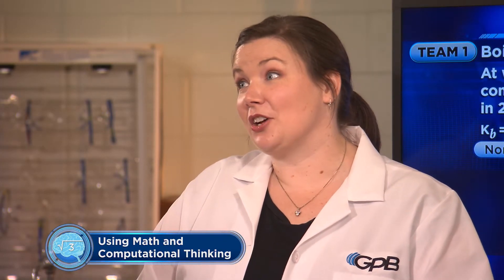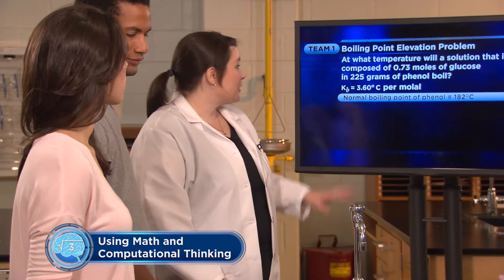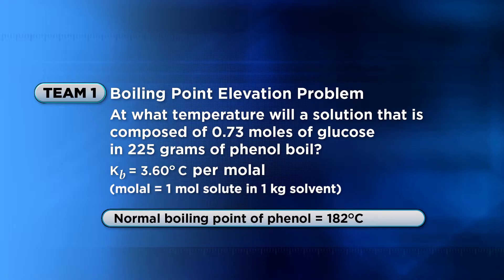Team 1, I'd like you to solve a practice problem involving boiling point elevation. You have a solution of 0.73 moles of glucose in 225 grams of phenol, and you'll figure out what the new boiling point of the phenol is. The boiling constant, or Kb, is 3.60 degrees Celsius per molal, and the normal boiling point of phenol is 182 degrees Celsius.